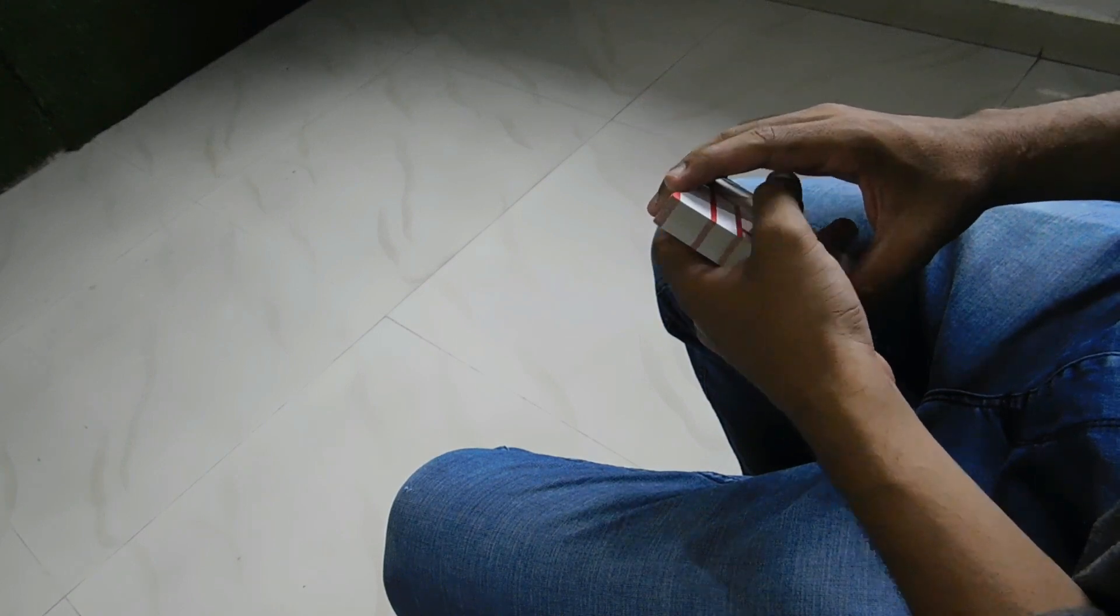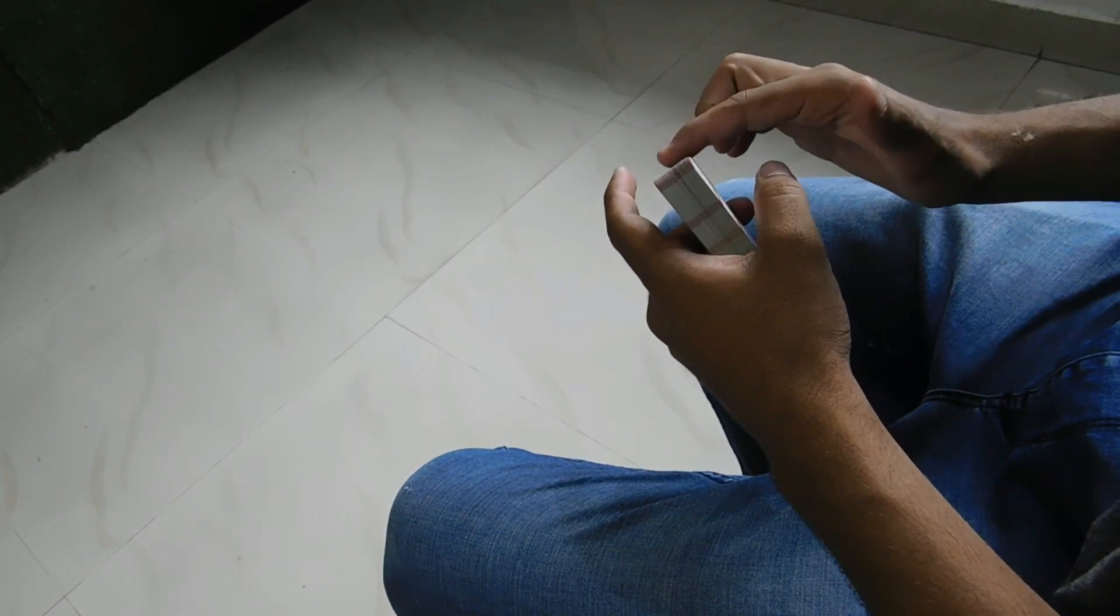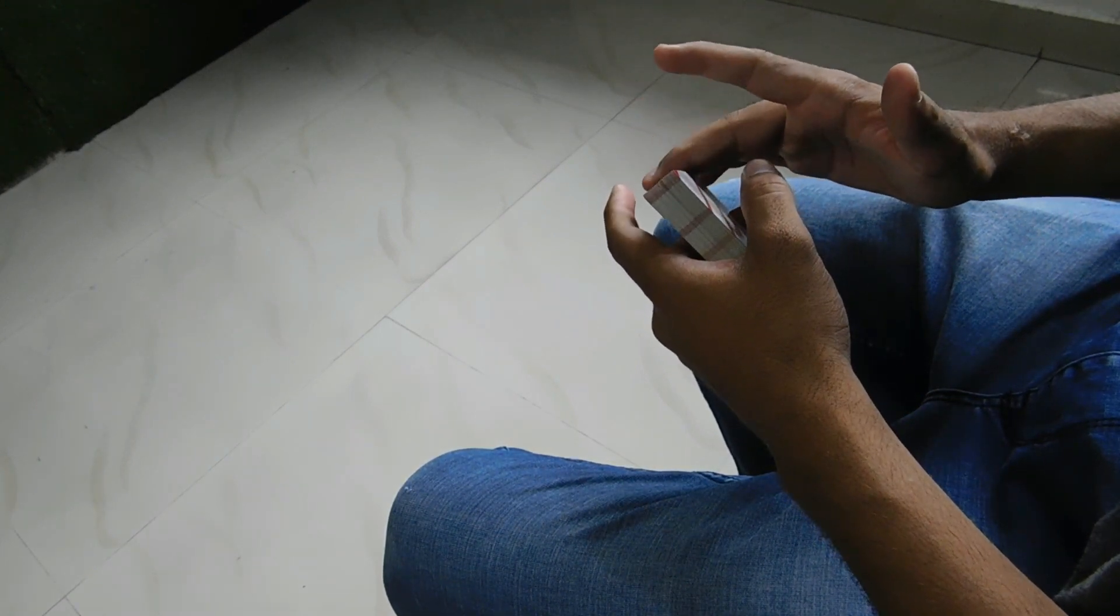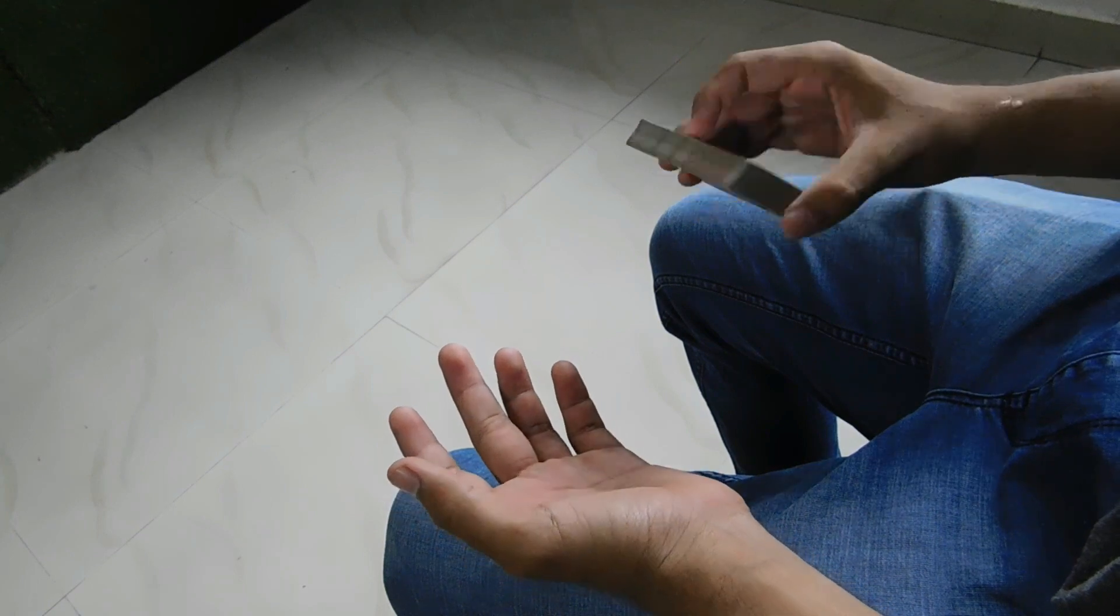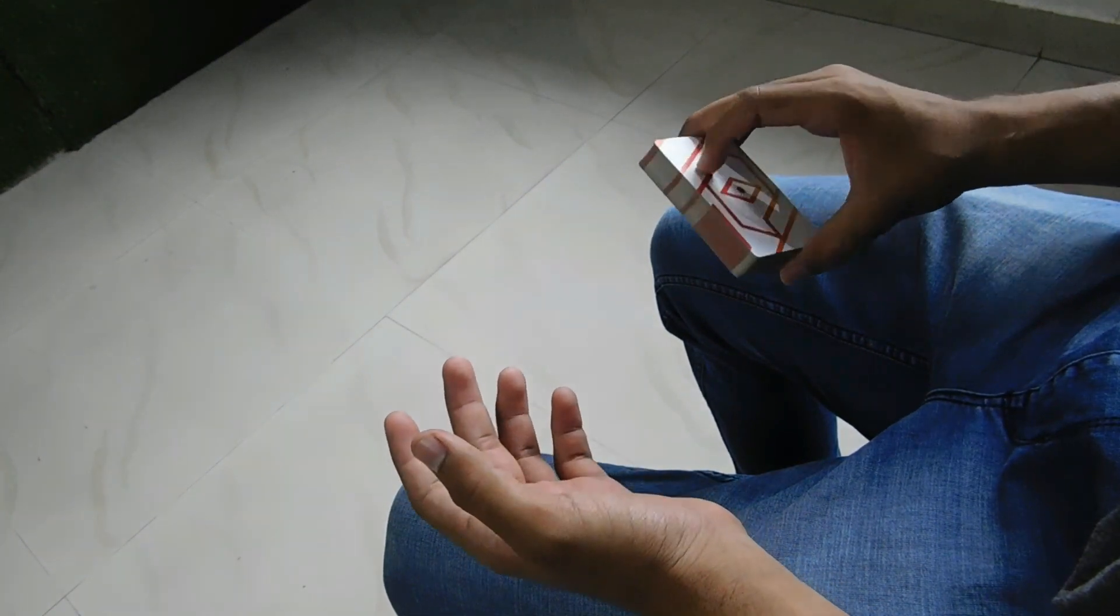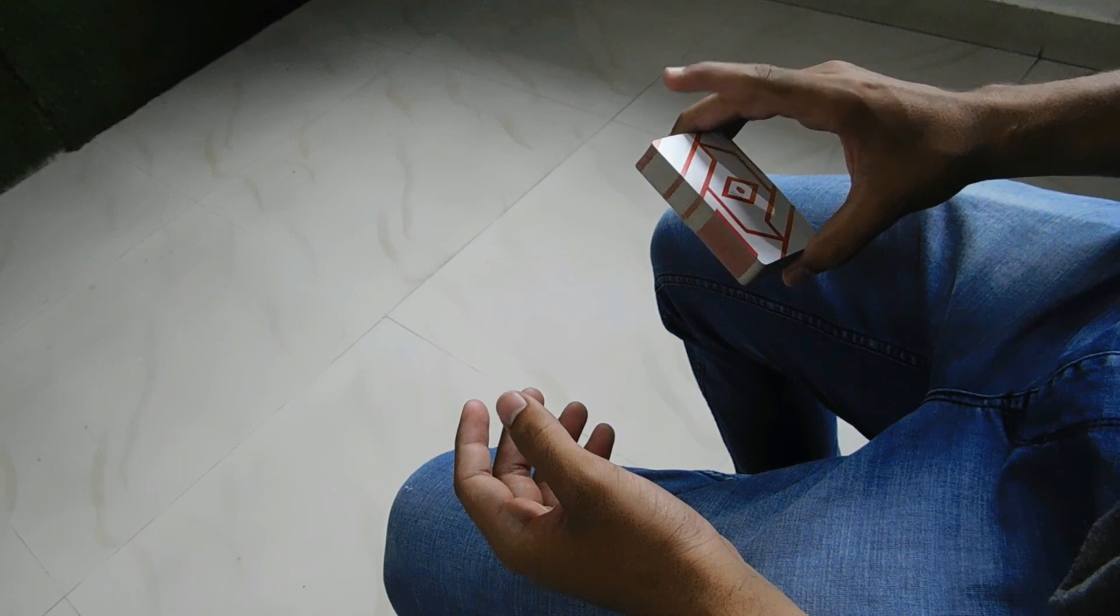To do a swing cut, you place your ring and middle finger on the top right short edge like this, thumb at the back. So basically this is the main grip for the swing cut. Technically it is a biddle grip, or you can say a modified biddle grip.